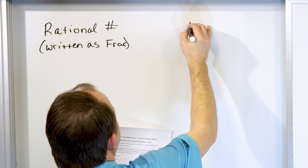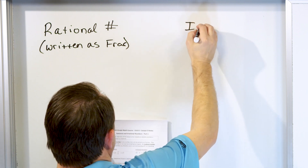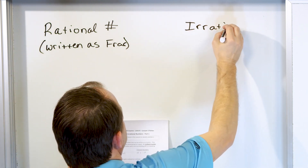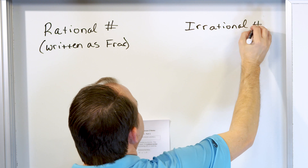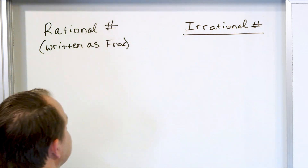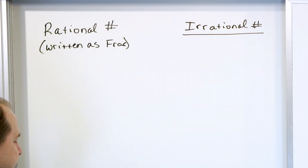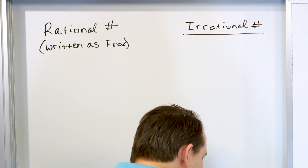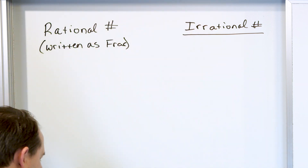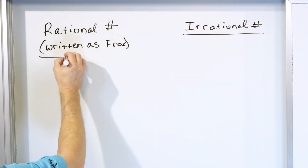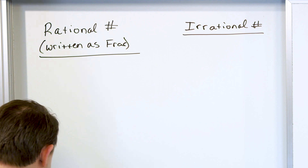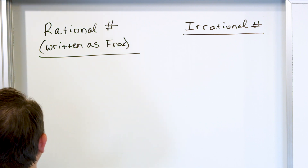And what about irrational? These are numbers that cannot be written as a fraction. So let's give a couple of examples of each of these, and then we'll solve a couple quick problems. Very simple concept, nothing hard here.